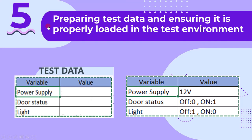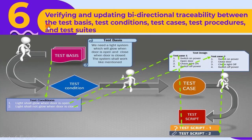The sixth main activity is verifying and updating bidirectional traceability between the test basis, test conditions, test cases, test procedures, and test suites. Similar to the logic discussed previously, the new work products here are test procedures or test scripts.